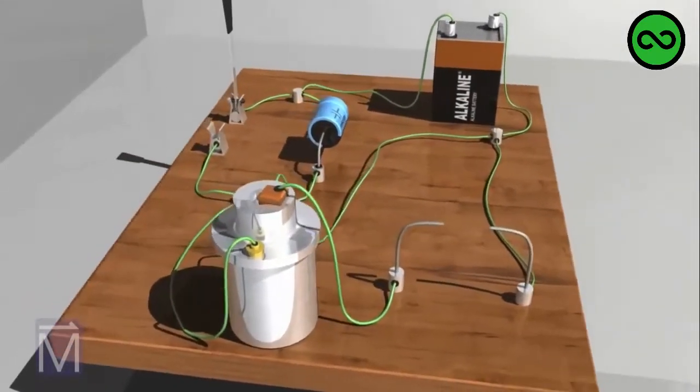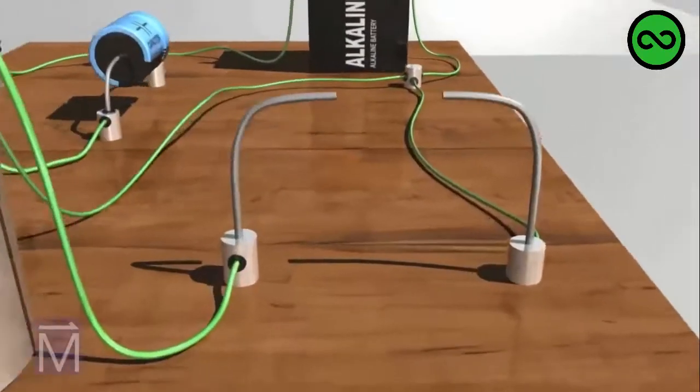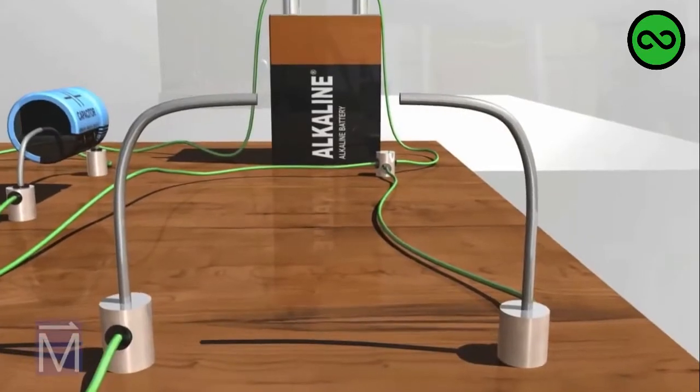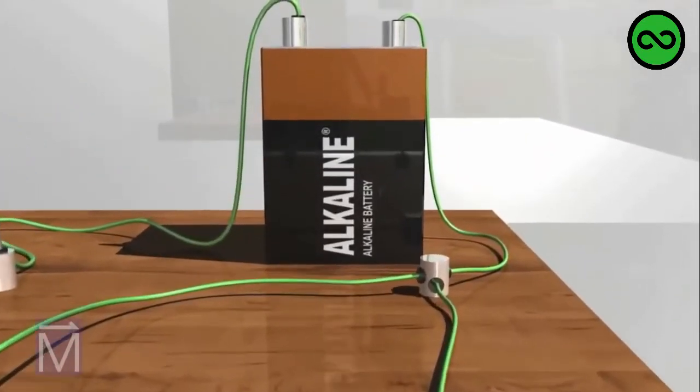Conventional automobiles burn gasoline in an internal combustion engine and convert that energy into motion, but first a spark is needed to ignite the fuel mixture. This demonstration shows how a 12-volt battery generates the high voltage required to create such a discharge.